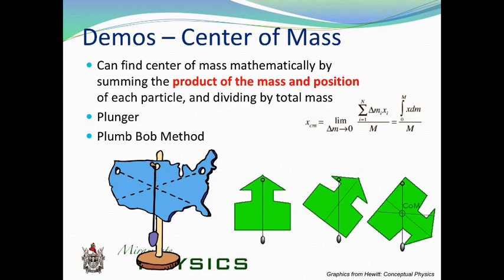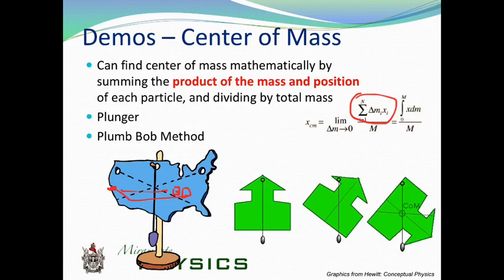These are a couple of interesting ways to calculate the center of mass. Mathematically, you take every little chunk of mass times its distance — you can do it from any point. Once you figure out all the little masses times each of those little distances, you can find where the center of mass is located. If you can set up a formula, you can solve it using integral calculus.